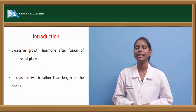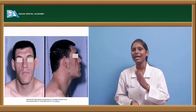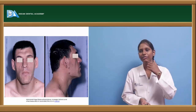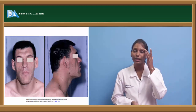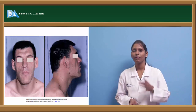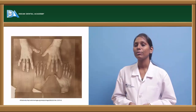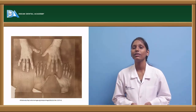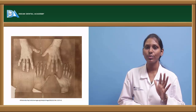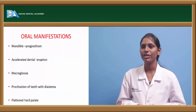Classic facial features of acromegaly include protruded mandible, elongated face, and protuberance of supraorbital rims. The hands of acromegaly patients are usually larger, puffy in nature, with sweaty hands and greater length.